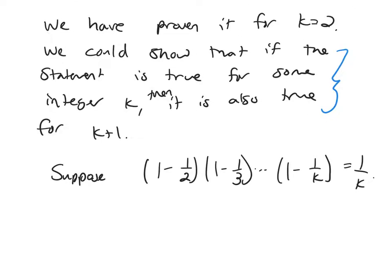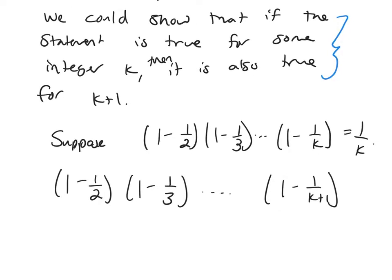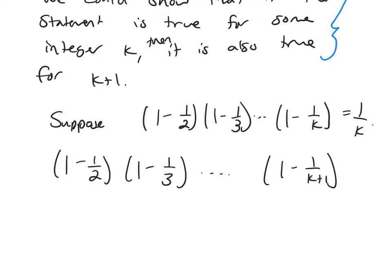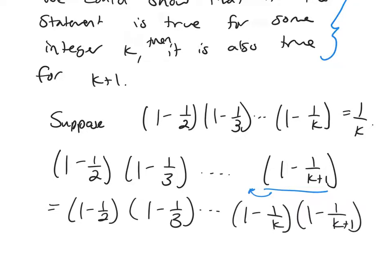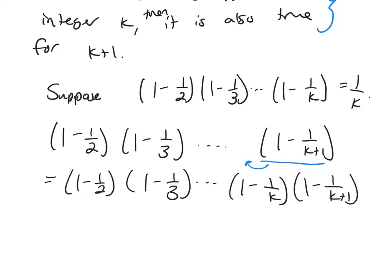And then what I need to do is I need to look at 1 minus 1/2, 1 minus 1/3. I need to show it's true for the next one, 1 over k plus 1. But in here I have the term right before this last one, what comes before that, 1 over k.